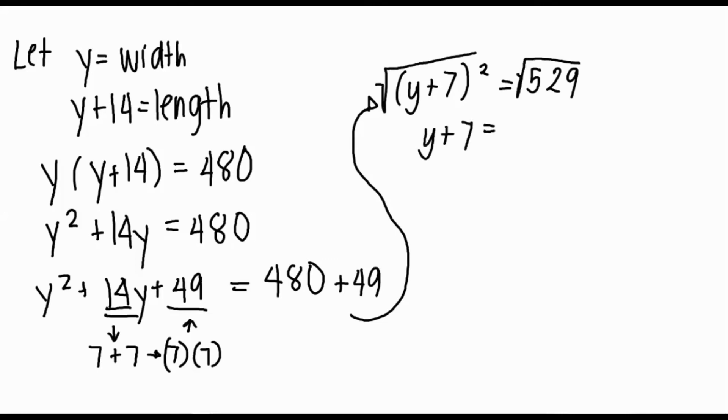Use the square root, which will give us y plus 7 is equal to positive and negative 23. y plus 7 is equal to 23 and y plus 7 is equal to negative 23, which will give us the answers y is equal to 16 and y is equal to negative 30.